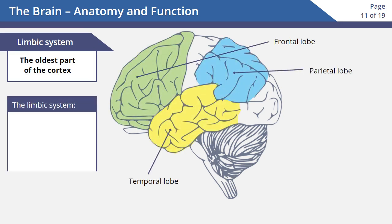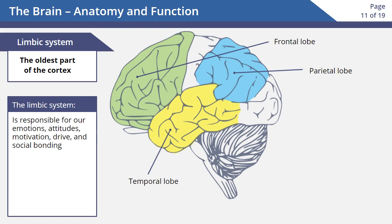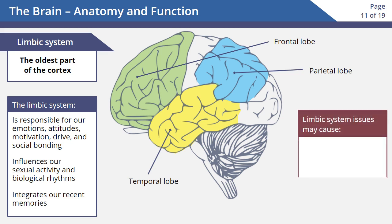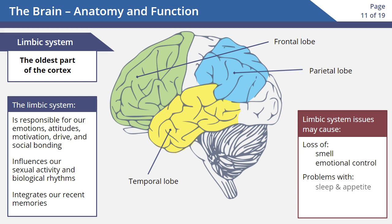The limbic system is the oldest part of the cortex. It includes parts of the temporal, frontal, and parietal lobes. It's responsible for our emotions, attitudes, motivation, drive, and social bonding. It influences our sexual activity and biological rhythms, and it integrates our recent memories. Someone with problems in their limbic system may experience a loss of smell, a loss of emotional control, problems with sleep and appetite, depression, social bonding, and memory.